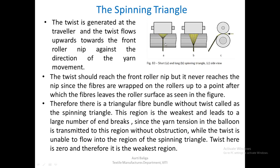This triangle is known as the spinning triangle. This region is the weakest and leads to a large number of end breaks, since the yarn tension in the balloon is transmitted to this region without obstruction while the twist is unable to flow into the region of the spinning triangle. The tensions generated in the balloon get easily transmitted right up to the spinning triangle, but the twist generated at the traveller cannot flow up to the nip of the front roller. Twist here is 0 and therefore it is the weakest region.